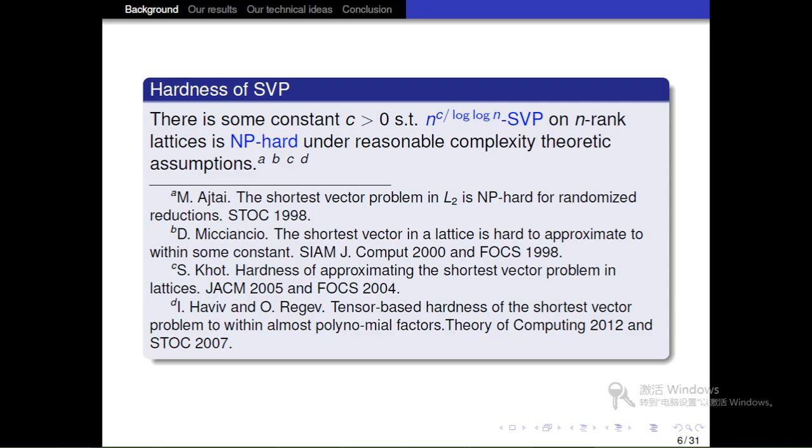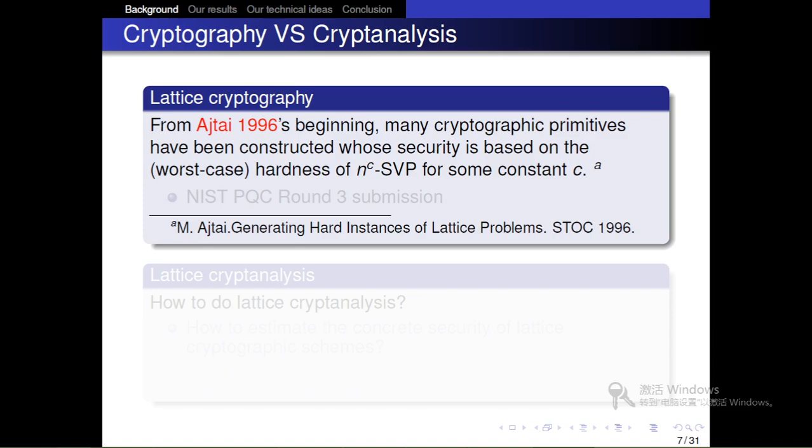Based on work of Ajtai, Micciancio, Khot, Haviv, and Regev, we know that SVP is NP-hard. More precisely, there is some universal constant C greater than zero such that n to C over log log n-SVP on an n-rank lattice is NP-hard under reasonable complexity theoretic assumptions. From Ajtai 1996's beginning, many lattice-based cryptographic primitives have been conjectured whose security is based on the worst-case hardness of n to C-SVP for some constant C. For example, NIST PQC Round 3 submissions include some lattice-based schemes.